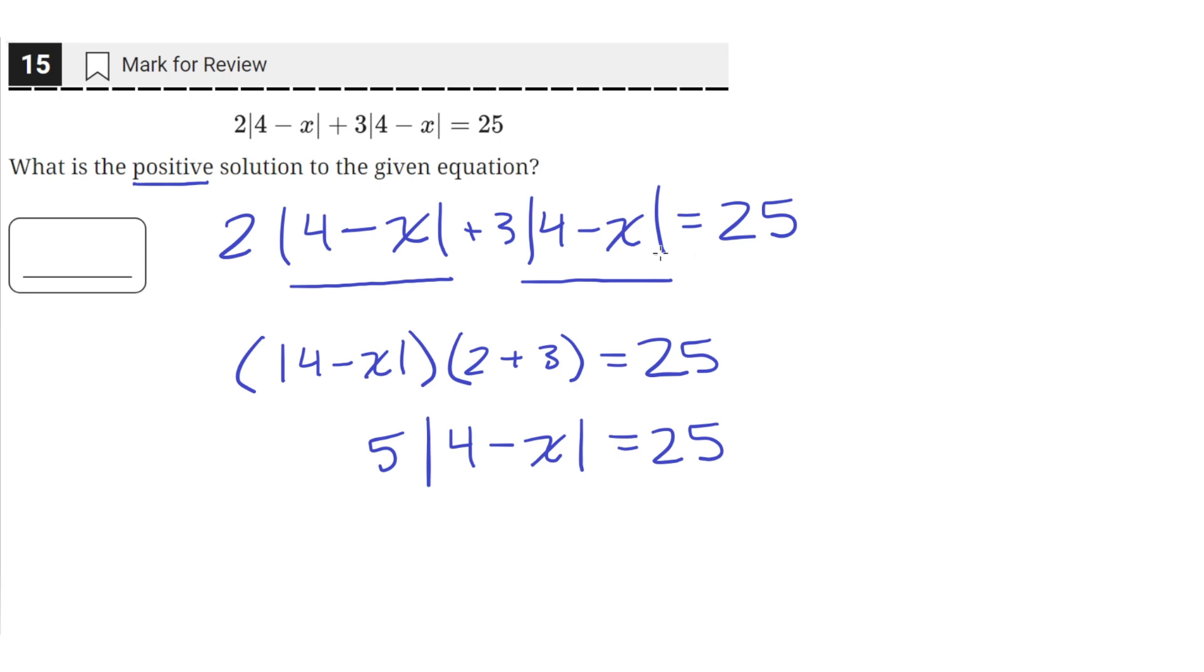You could have skipped from this step to this line here by adding them together as if they were like terms. Since both of these have this quantity, absolute value of 4 minus x, you could add the coefficients together, kind of like adding like terms together.